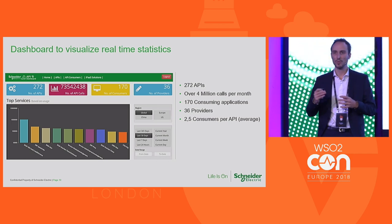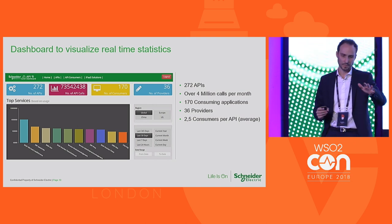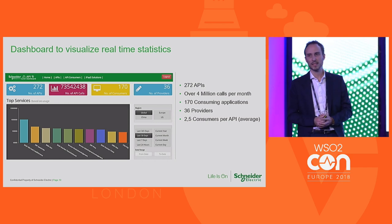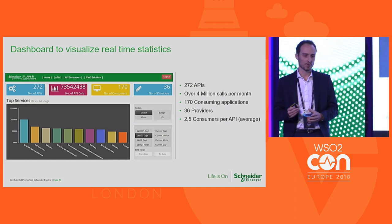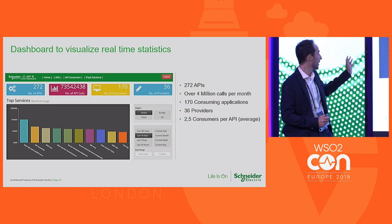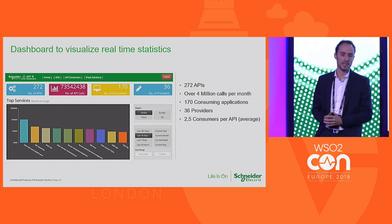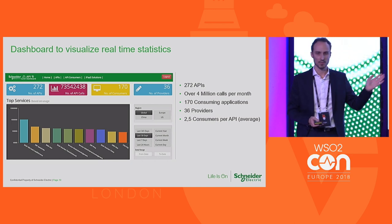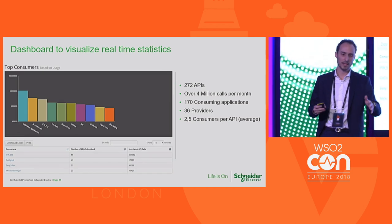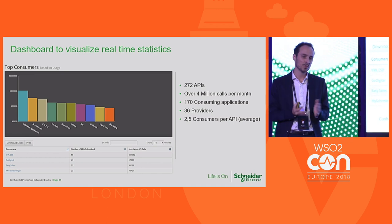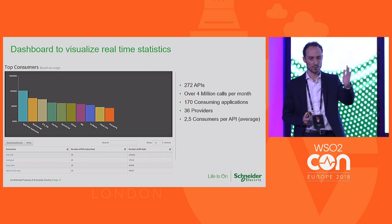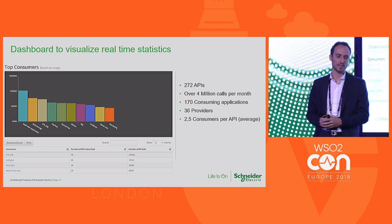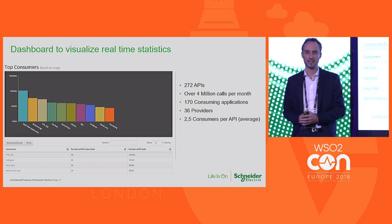On the dashboard screen, you can filter by region — globally, China, US, and Europe — and select a custom time period. Out of the 272 APIs, you can see the APIs with the highest number of calls for the selected period. You can also view from the consumer perspective: out of 170 consumers, you can see the 10 consumers with the most API calls for the selected period, with the full list below across several pages.